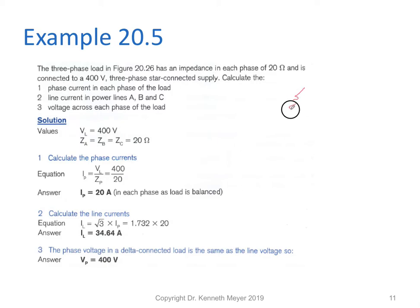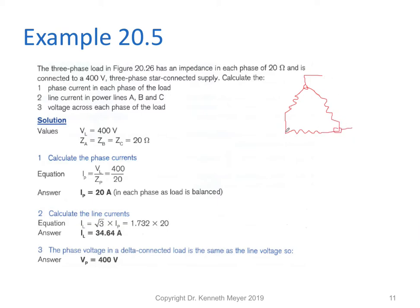Our load is connected up like this — drawing a rough Delta here. It always pays to draw a diagram; I harp on at my students to always draw a diagram. We know each of these is 20 ohms, so we have 400 volts across Z_a, Z_b, and Z_c. The impedance of each is 20 ohms.